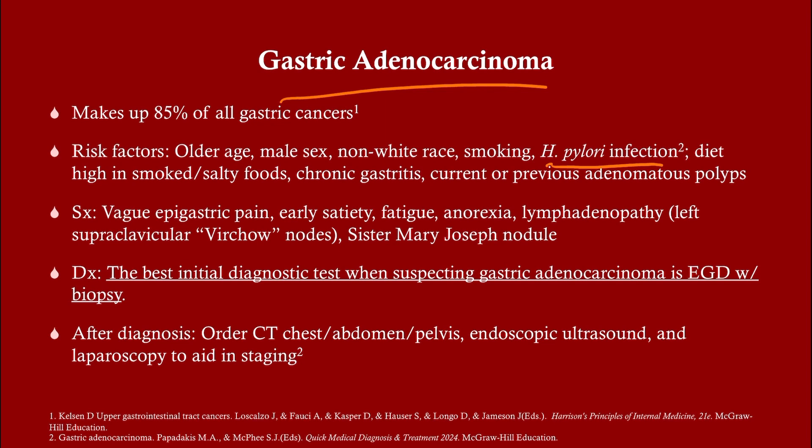Another way this could come up is supraclavicular lymphadenopathy. You might think that's up by the neck and suspect squamous cell carcinoma of the head and neck. But the supraclavicular lymph nodes on the left are actually sentinel lymph nodes for abdominal cancers — these are called Virchow nodes, and you need to be aware of that because the USMLE loves to test that. There's also something called the Sister Mary Joseph nodule, which we'll get to in a bit.